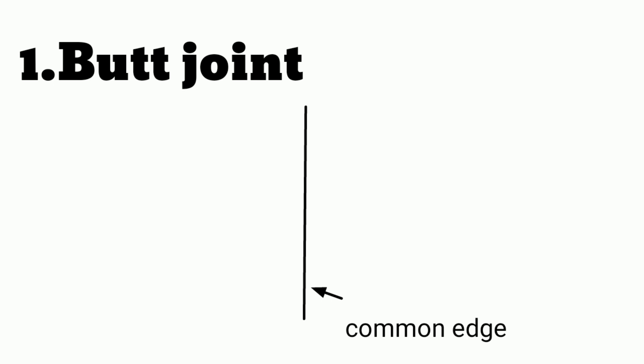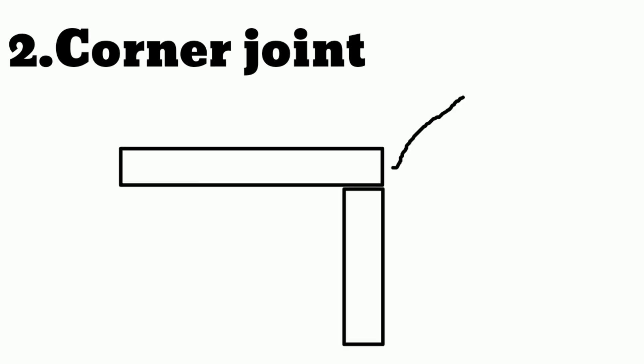Now the second, corner joint. In this type of joint, the two parts are at a right angle and joined at their common edge, as shown in the figure.